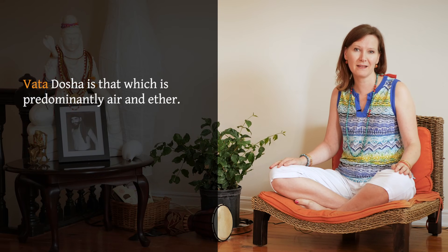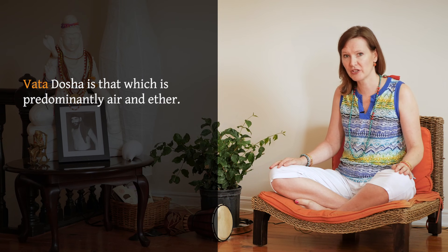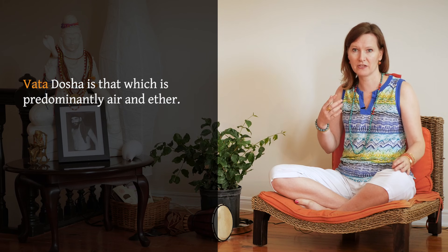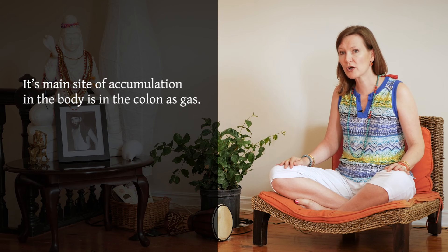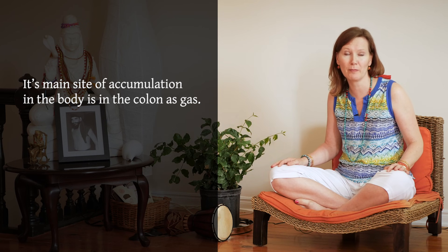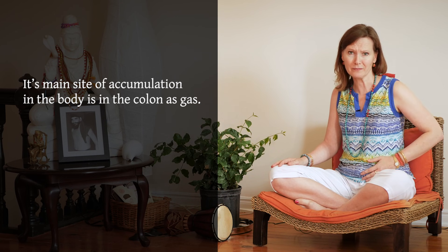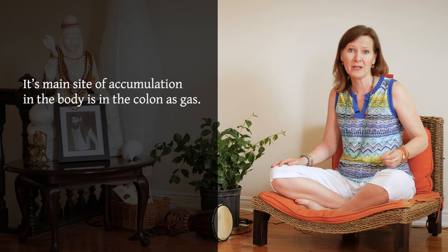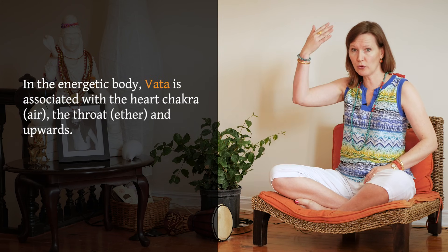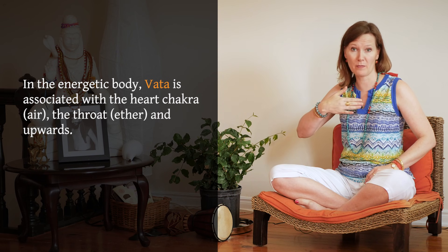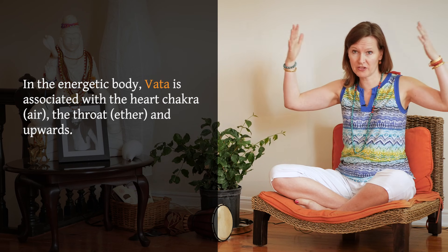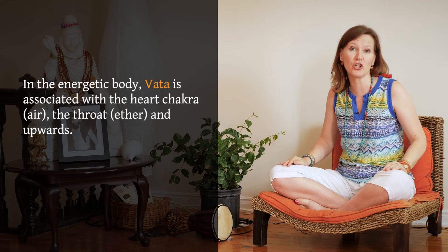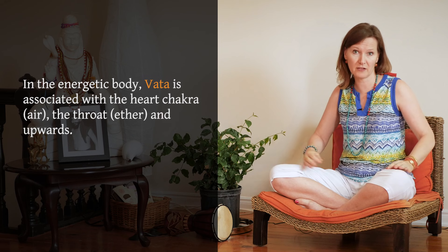Vata is air and ether — the air-ether type. And interestingly, you'll find that energetically and physically, there is a kind of a spiral that takes place. Because Vata being air and ether, where it manifests — its largest site within the body — is in the colon. It builds up as wind and gas in the colon. Whereas energetically speaking, you'll find Vata is everything from the air element at the level of the heart chakra, ether to the throat, and consciousness, the mind, intuition. So everything in the upper chakras, but physically, the site of accumulation is in the lower area.